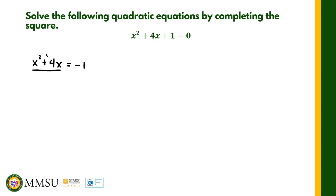Now we need to complete the square on the left side: x² + 4x. The question is, what shall we add? As stated earlier, we add (b/2)². In this case the value of b is 4, so 4 divided by 2 is 2, and 2 squared is 4. So we are going to add 4 to both sides of the equation.